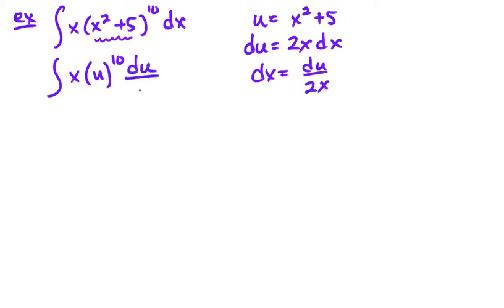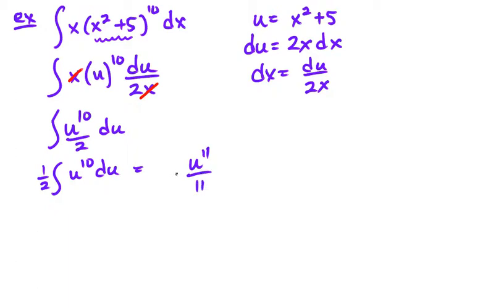So I can put this in here now as du over 2x. And yet again, I cancel out those x's, because I've picked the right one. And I now end up with u¹⁰ over 2 du. The one-half can come out. And using the power rule for integration, I get u¹¹ over eleven times one-half plus C, which is u¹¹ over 22 plus C.